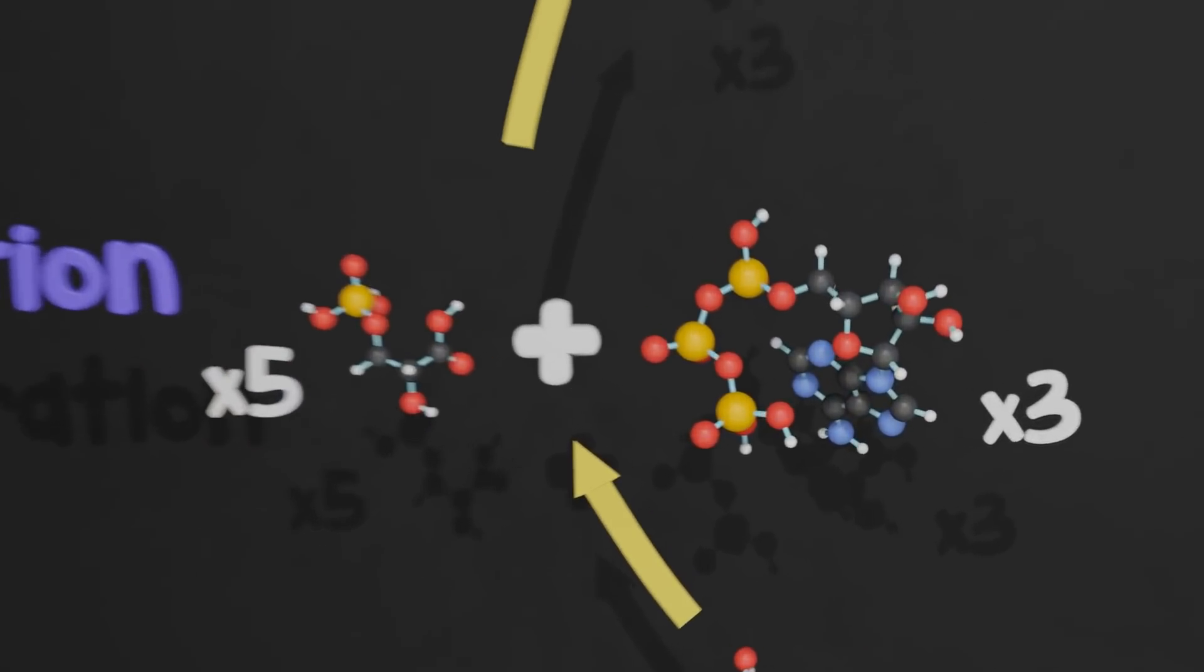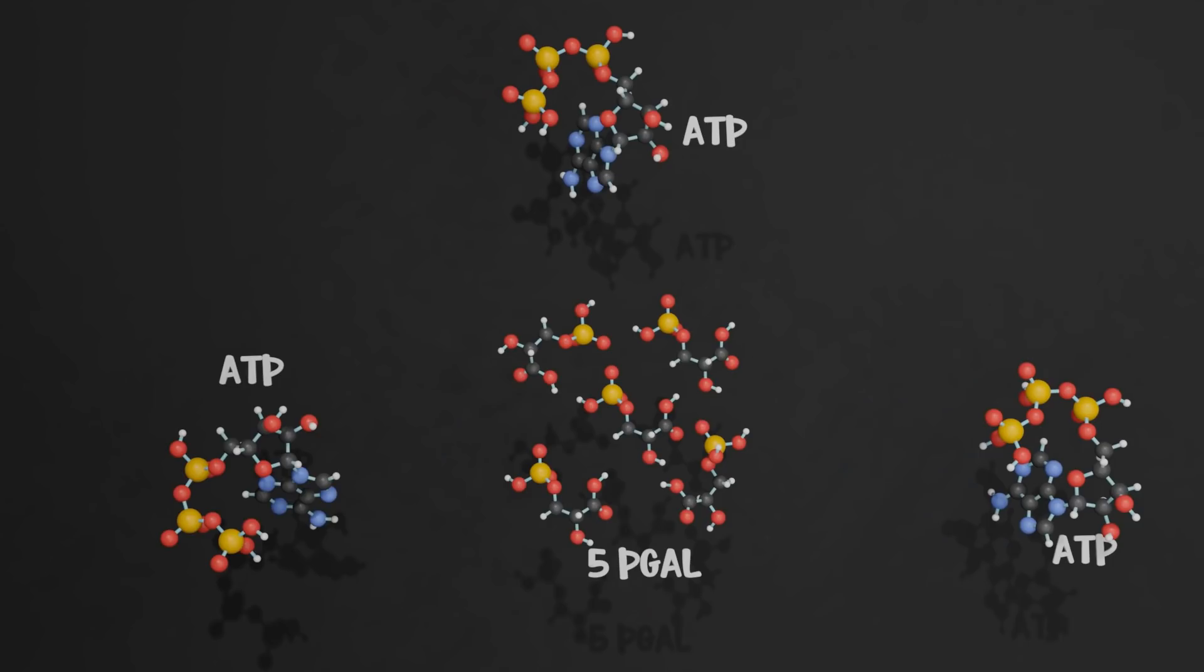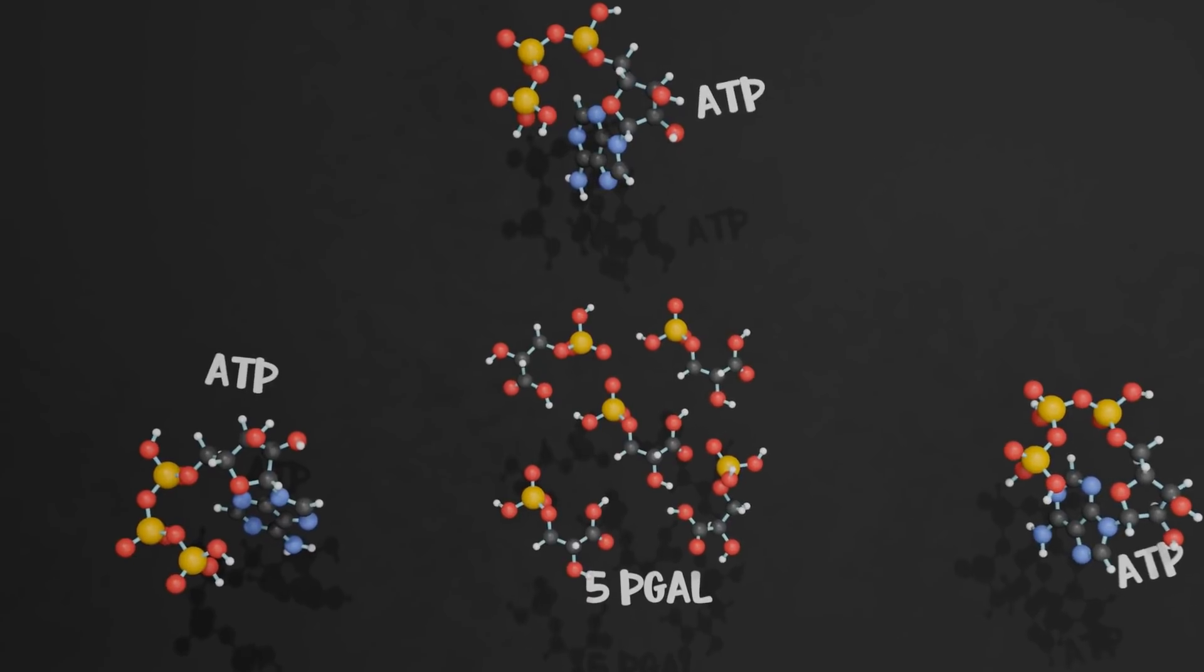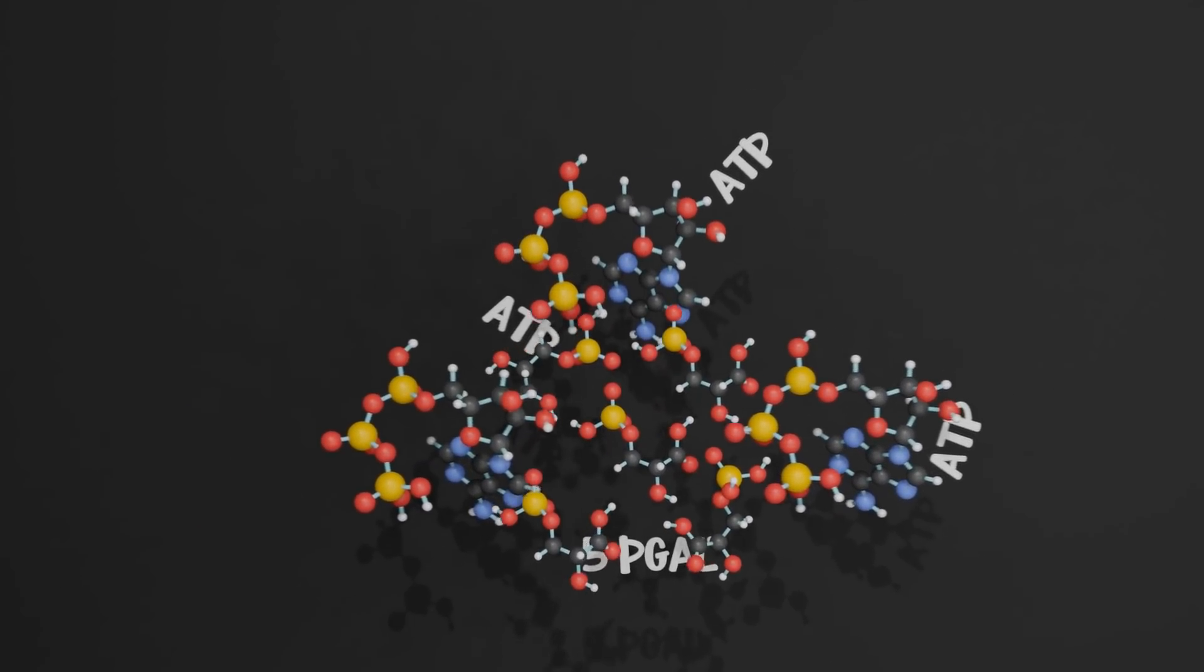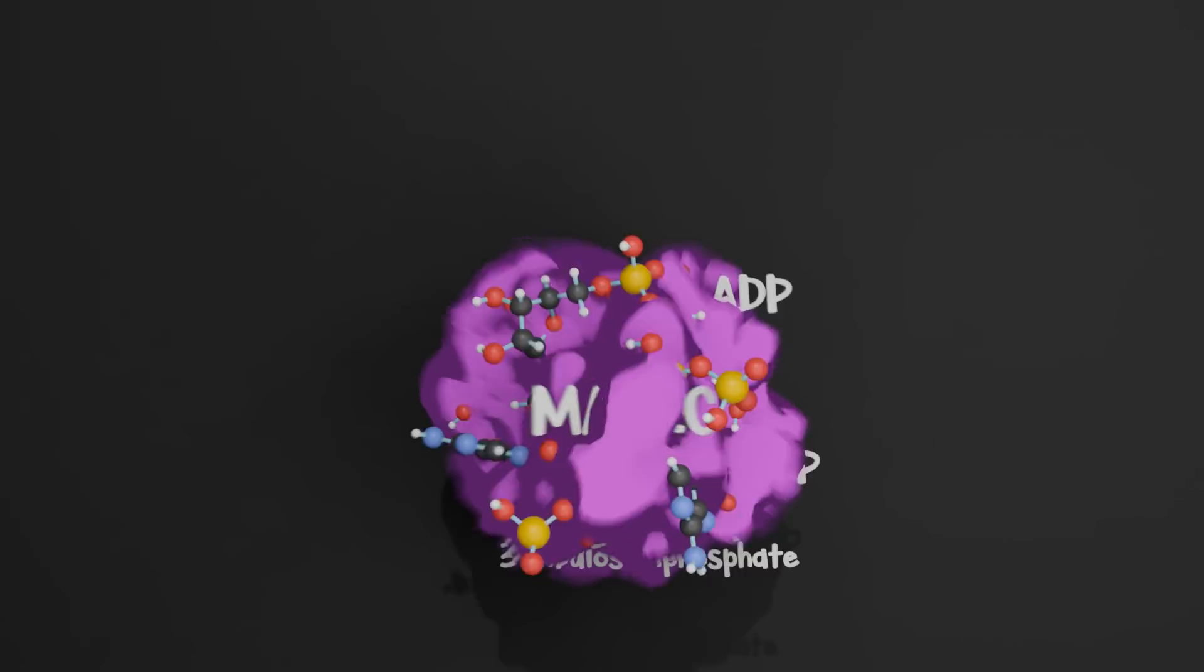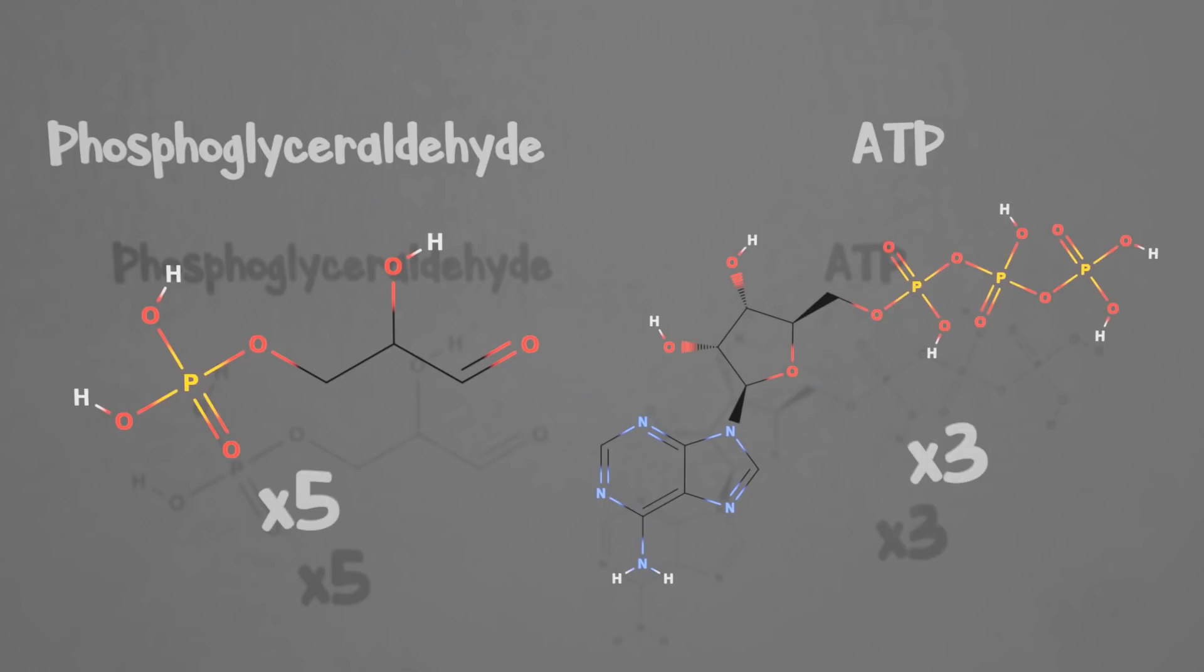This step was a bit strange to me because no one, anywhere, wants to explain it. Everywhere I looked, the last step was simply, then the five phosphoglyceraldehydes reform into three ribulose molecules via ATP. But that doesn't make sense. You can't just combine these together. If you've taken organic chemistry, you know phosphates generally attack the carbonyl carbon, so that can't be the first step.